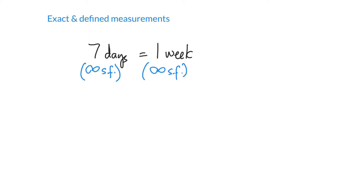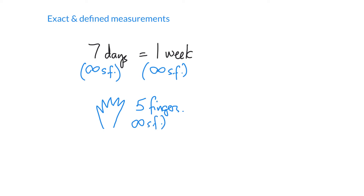You also have numbers that are counted. For instance, a hand has exactly five fingers — that five is a counted number and therefore has an infinite number of significant figures. This also comes up when averaging: if you take three measurements and divide by three, that three is a counted number and is infinitely exact, giving it an infinite number of significant figures.